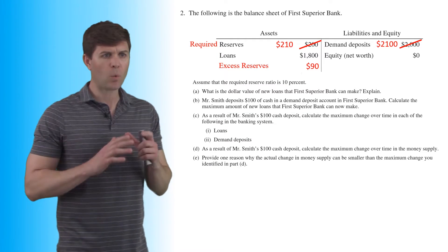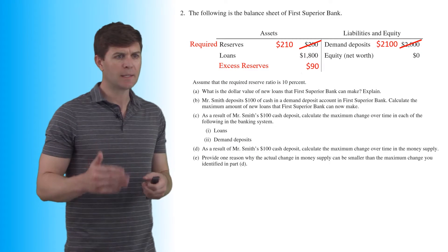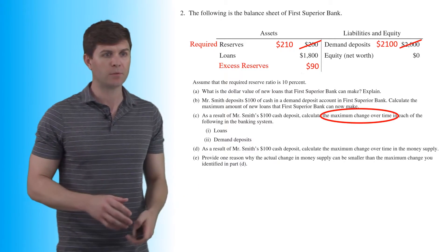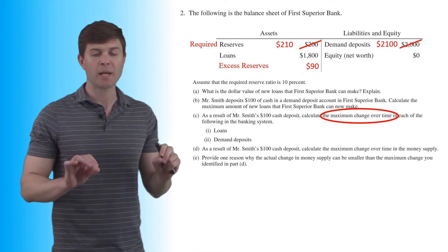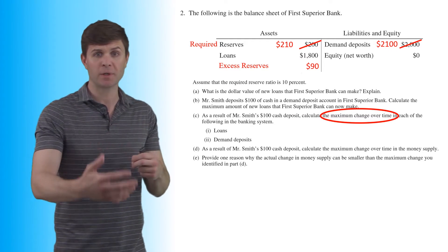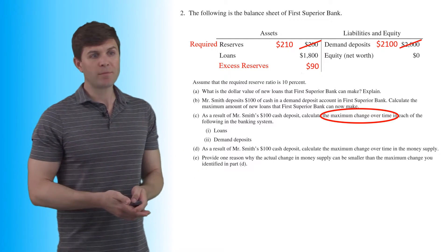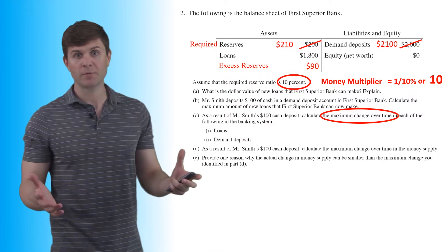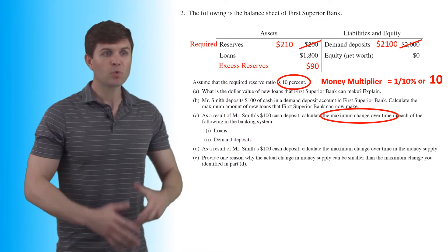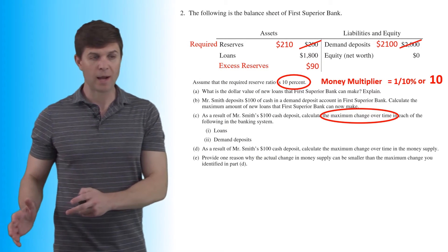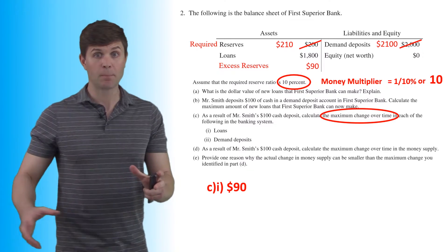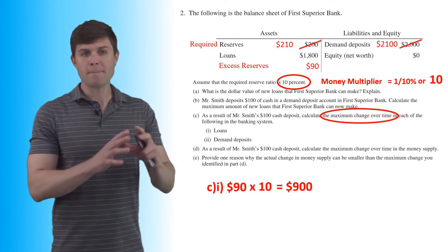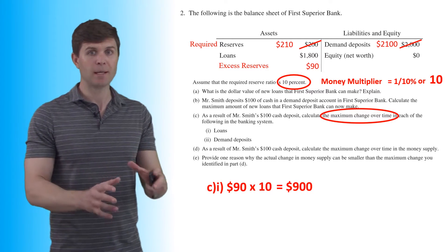Part C asks for the maximum change over time in loans — different from an immediate or initial change. We have $90 in excess reserves and a 10% reserve requirement, giving us a money multiplier of 10. Every dollar loaned out multiplies by 10, so that $90 in excess reserves will eventually turn into $900 in loans going out into the system.